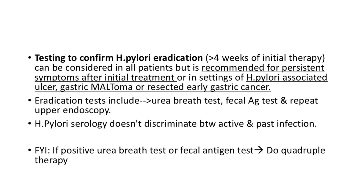Keep in mind that H. pylori serology is not helpful to distinguish between active and past infection. Importantly, if the urea breath test or fecal antigen test is still positive, the next step is to start quadruple therapy.